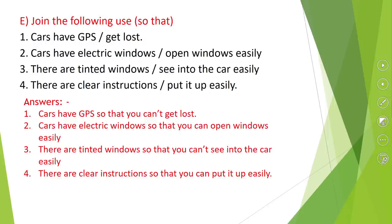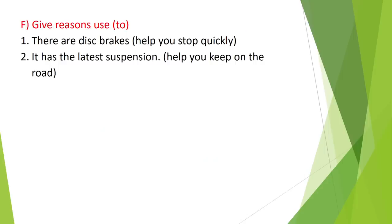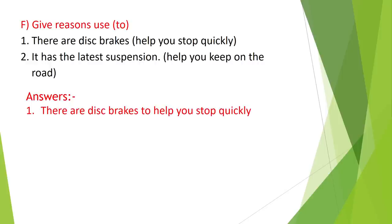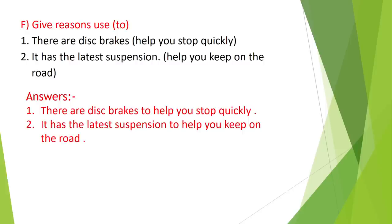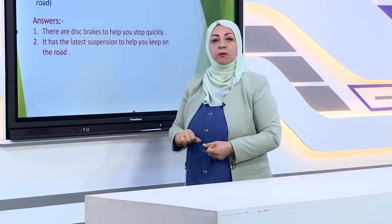Another sample: give reasons using 'to.' This type is very easy — just place 'to' between the two sentences, and it is always followed by the base form of the verb. Example: there are disc brakes — help you stop quickly. Answer: there are disc brakes to help you stop quickly. It has the latest suspension to help you keep on the road. After 'to,' always the base form of the verb.